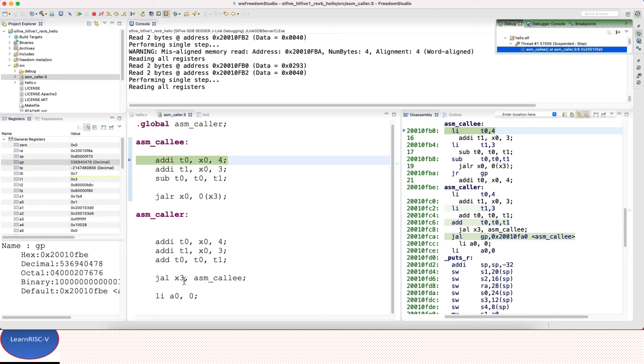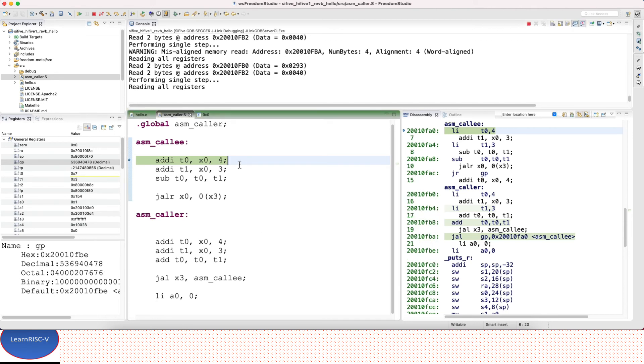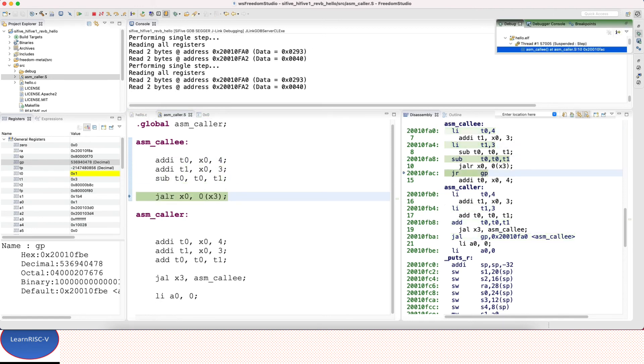After the execution of this, the return address is not stored in x0 and the jump or the execution should jump into the value stored in x3 with the offset of 0. So x3 has this, so it should come back to the next instruction. Okay, so that's it.